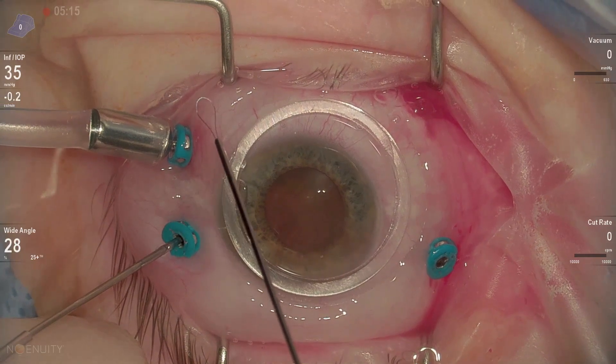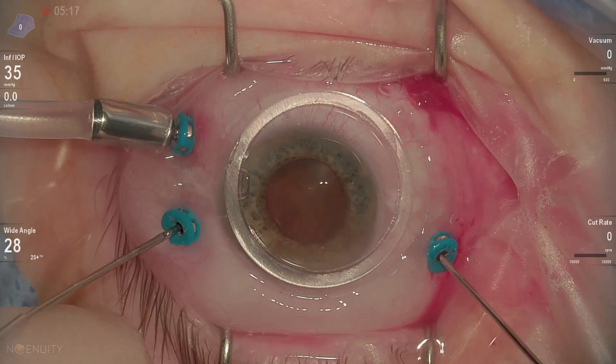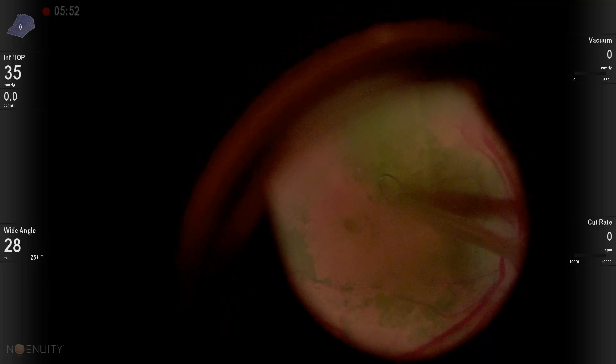After completing the core vitrectomy, I use this Alcon Flex Loop. It's replaced the Tano brush in many instances.